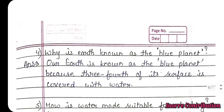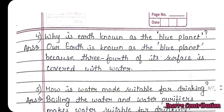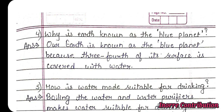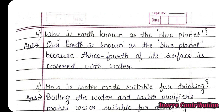Fourth question: Why is Earth known as the blue planet? Answer — our Earth is known as the blue planet because three-fourths of its surface is covered with water.